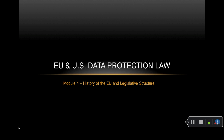Since then about 22 other members joined and a huge single market, also known as the internal market, has been created. What began as a purely economic union has evolved into an organization spanning policy areas from climate, environment, and health to external relations in security, justice, and migration. A name change from the European Economic Community to the European Union in 1993 reflected this.